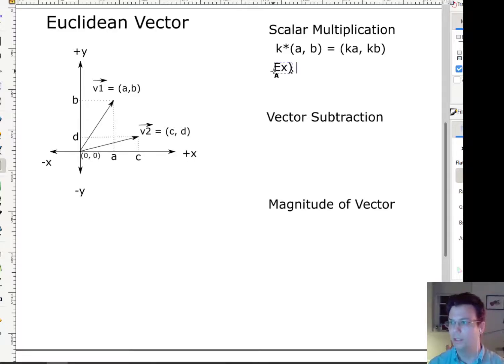So for example, let's say k is 2. So I have 2 times (a,b). So what that's going to give me is (2a, 2b). And what that is actually is lengthening the vector by a factor of 2.